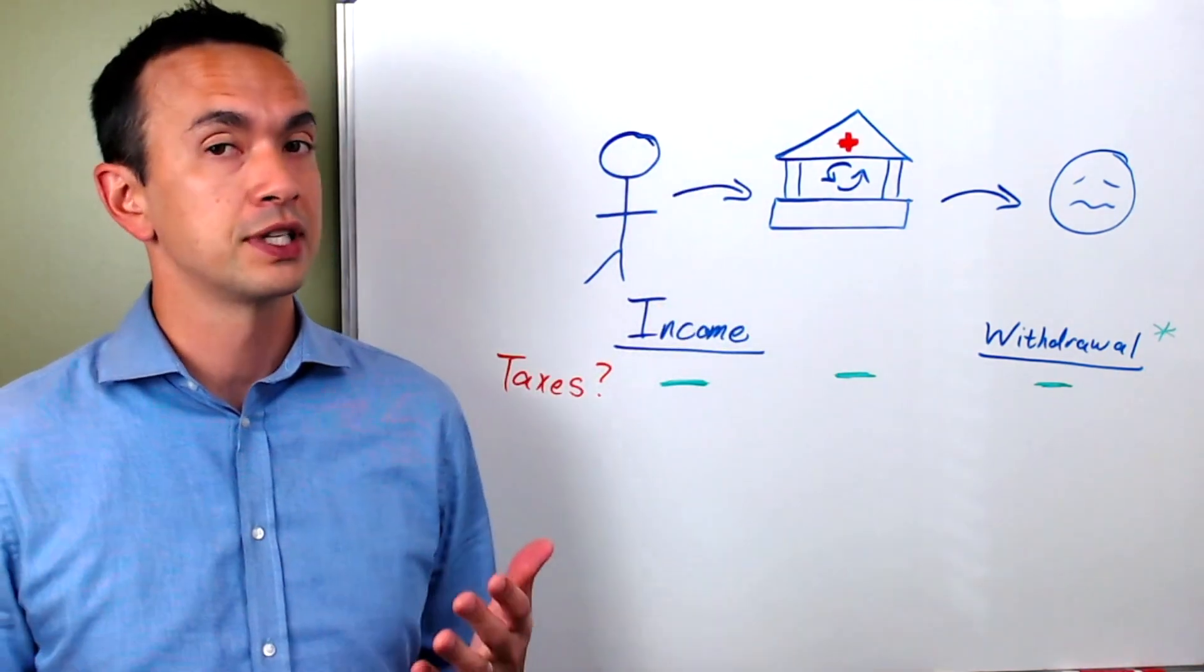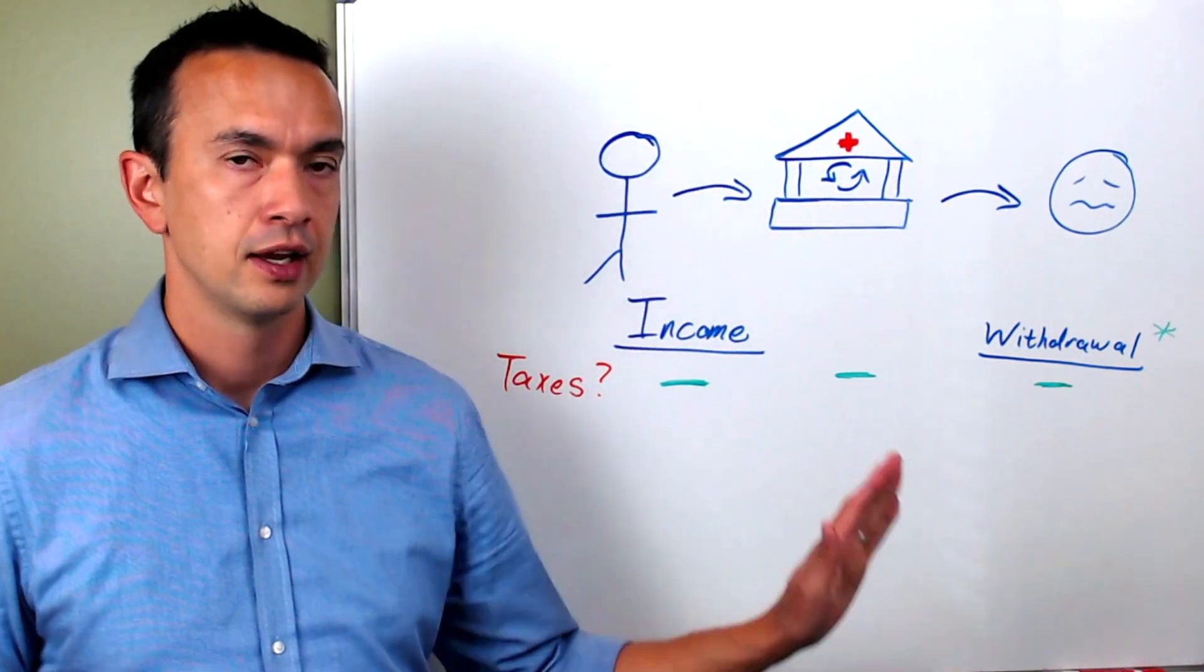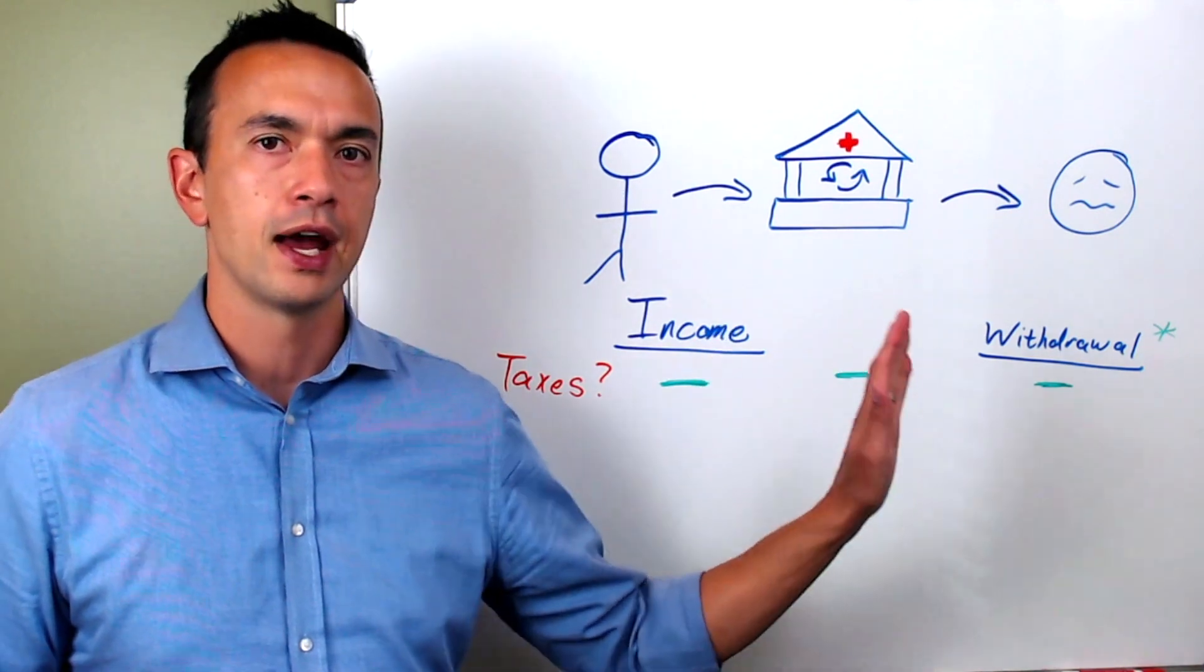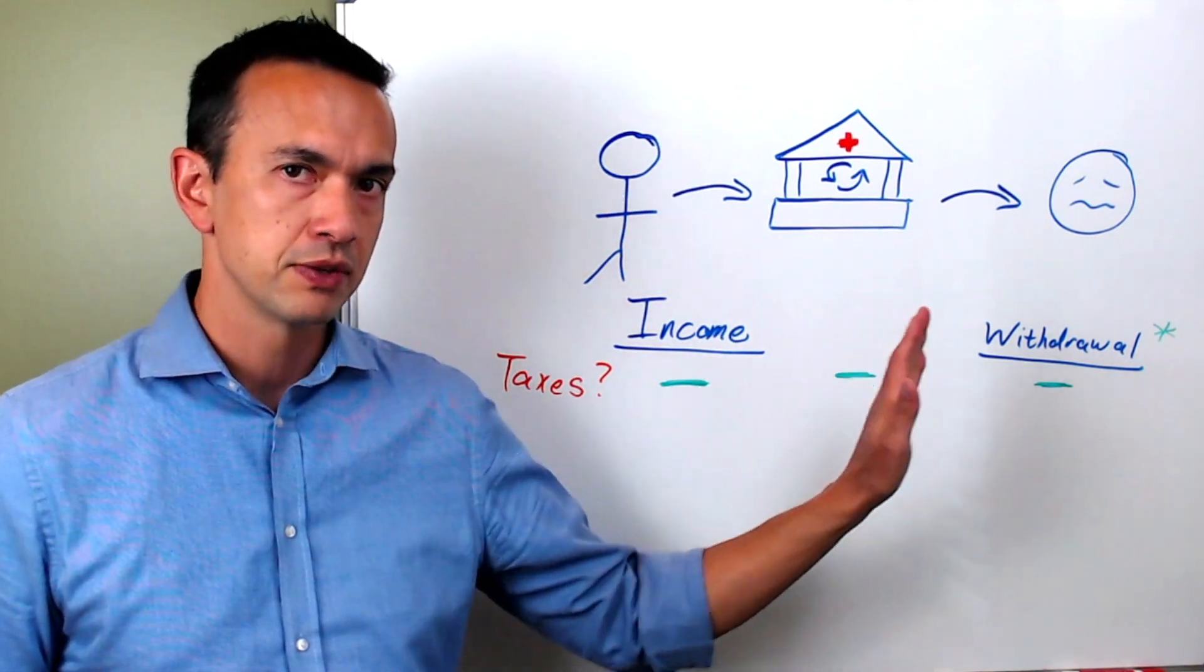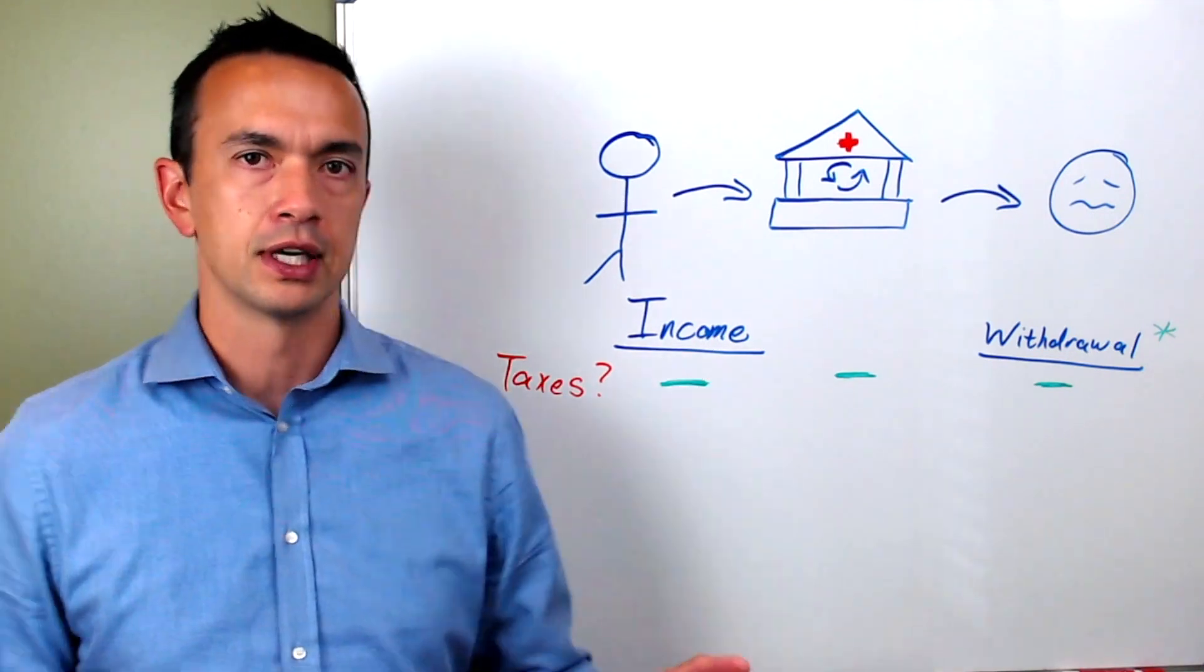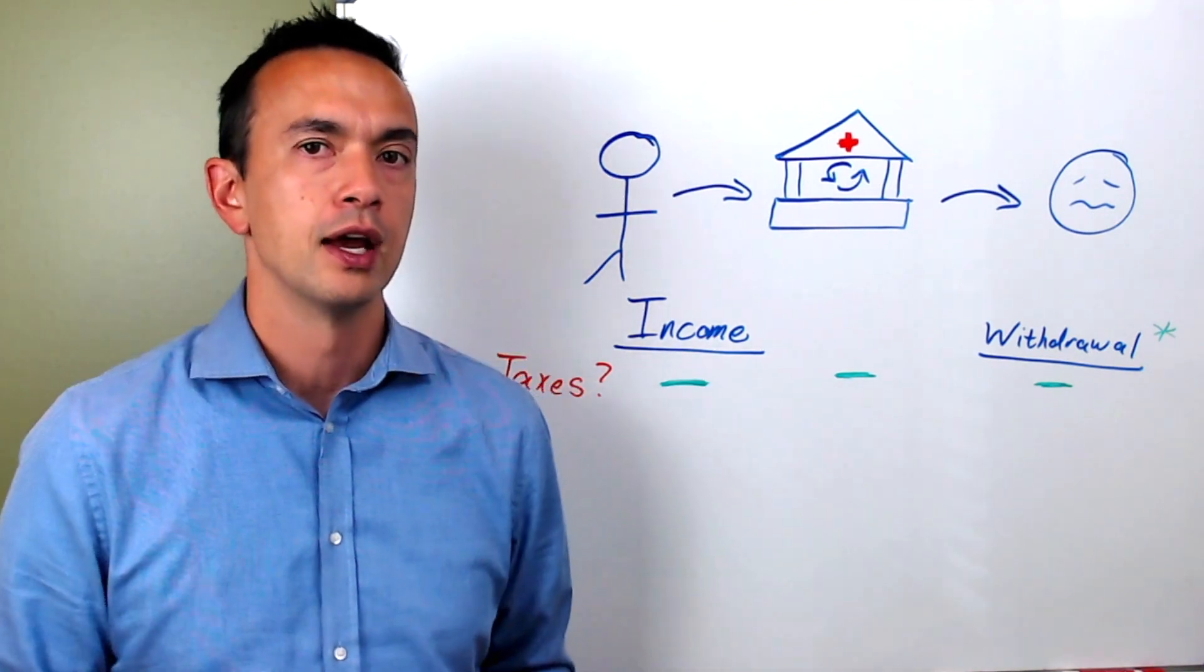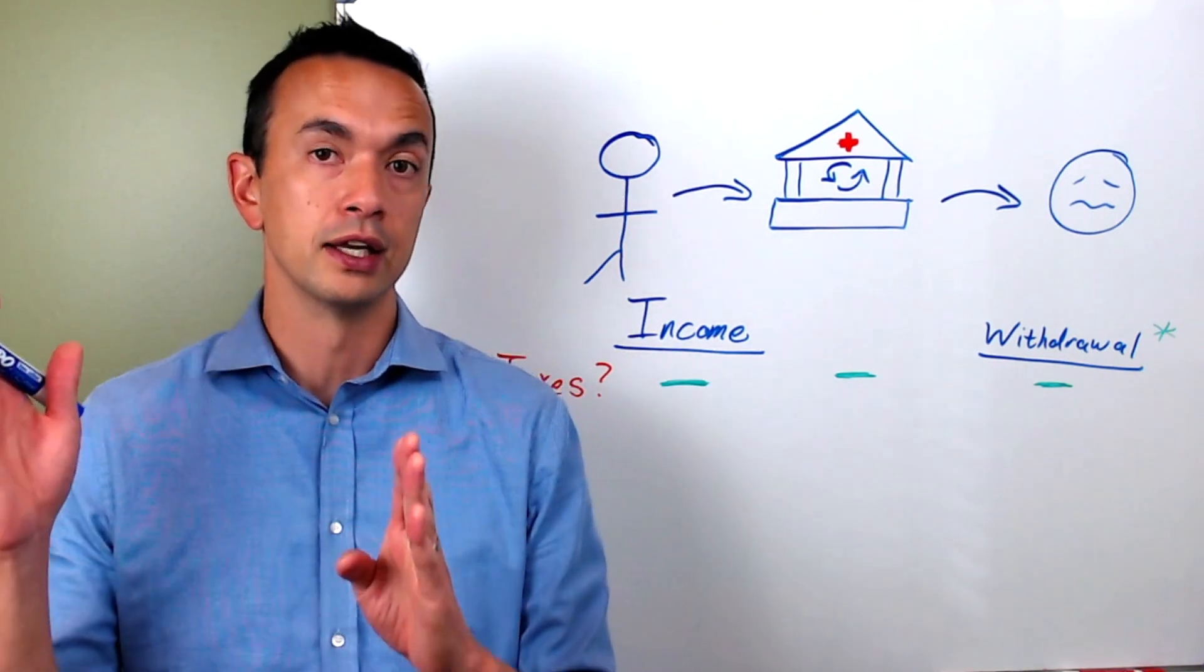One of the first things to establish is that with an HSA, you can kind of think of it as being two types of account bundled into one. There's one side that's more like a checking account and then there's another side that's like an investment account.